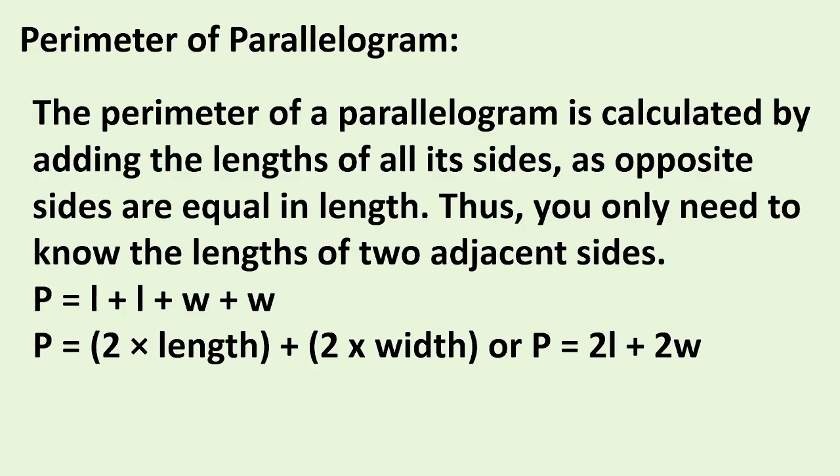Perimeter of a Parallelogram: The perimeter of a parallelogram is calculated by adding the lengths of all its sides. As opposite sides are equal in length, you only need to know the lengths of two adjacent sides. Formula: P = 2L + 2W, or P equals 2 times length plus 2 times width.